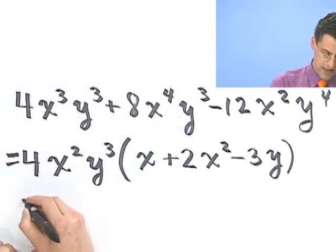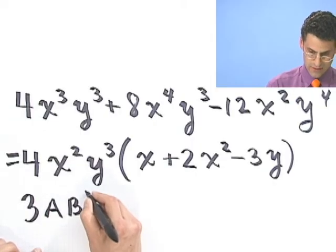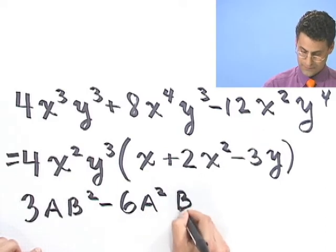Let's do one last one real fast. How about 3ab² - 6a²b³?